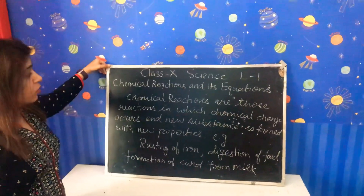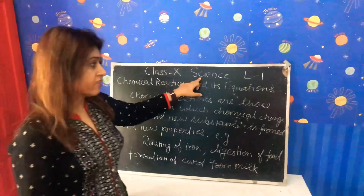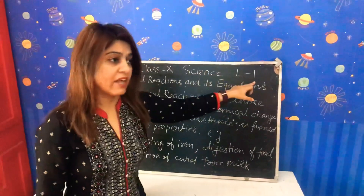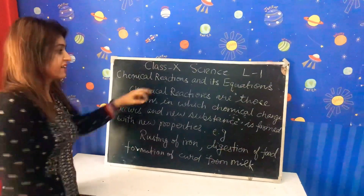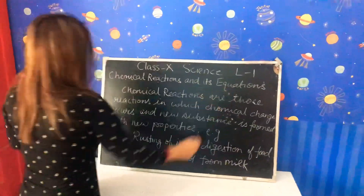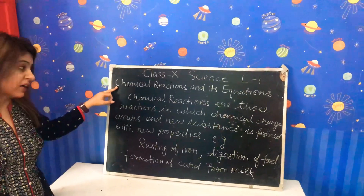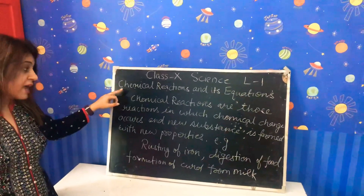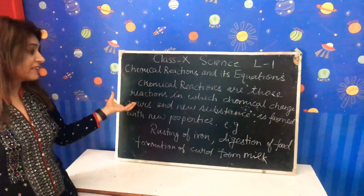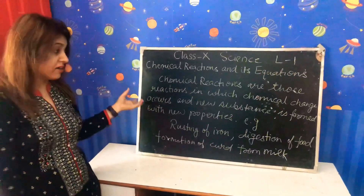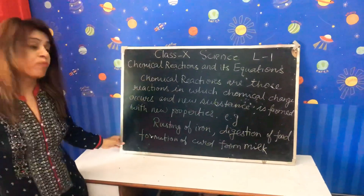Hello students. Today we are starting Class 10 Science, Lesson 1: Chemical Reactions and Equations. First of all, I want to tell you about what we mean by chemical reactions. Chemical reactions are those reactions in which some chemical changes occur and new substances are formed with new properties.